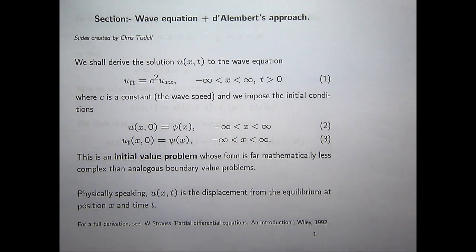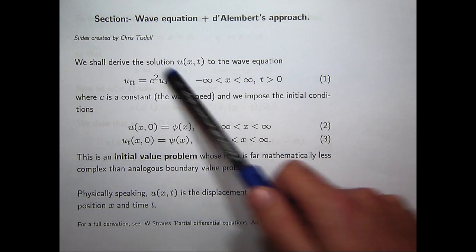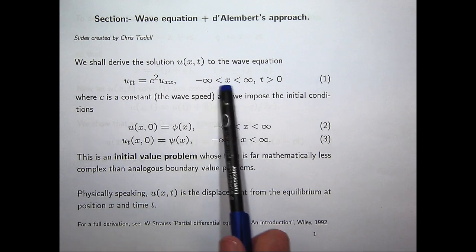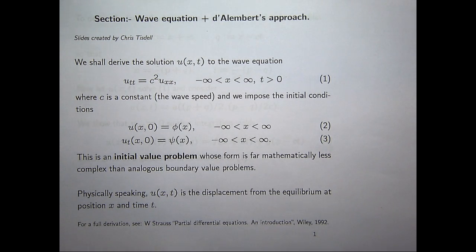C squared here is a constant known as the wave speed. And we're considering this equation for x on the entire real axis. So this makes it a little bit different from the boundary value problem that we looked at with the heat equation.